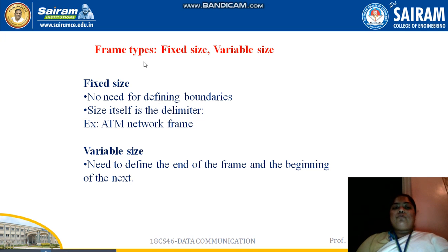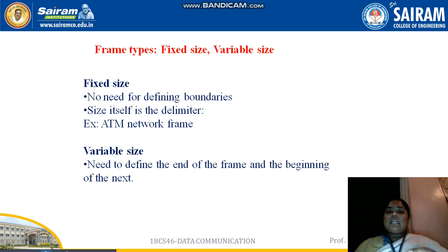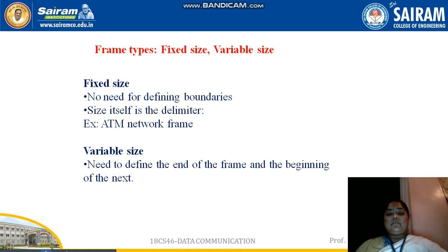There are two types of frames: fixed size and variable size. Fixed size means the manageable data unit has its own fixed packet or bit size — the size itself acts as a delimiter. For example, the ATM network uses fixed size frames. Variable size means the end of one frame needs to be defined, along with the beginning of the next frame — it defines the address of the end of one frame and the start of the next.